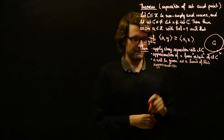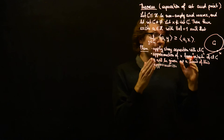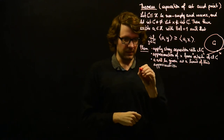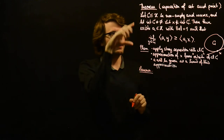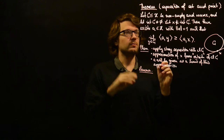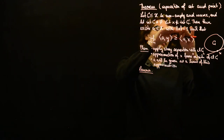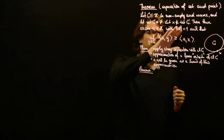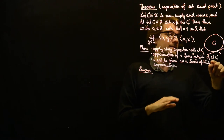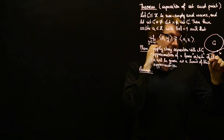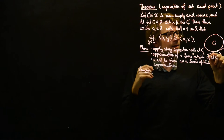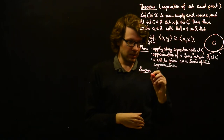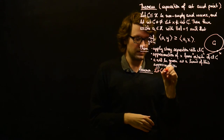We get a sequence of separating hyperplanes, and we have to find a convergent subsequence. The limit will give us the desired hyperplane — separating but not strictly separating. The vector A will be given as a limit of this approximation. In order to apply this, we have to show a little more than X not being in the interior of C, and this will be the content of our lemma.